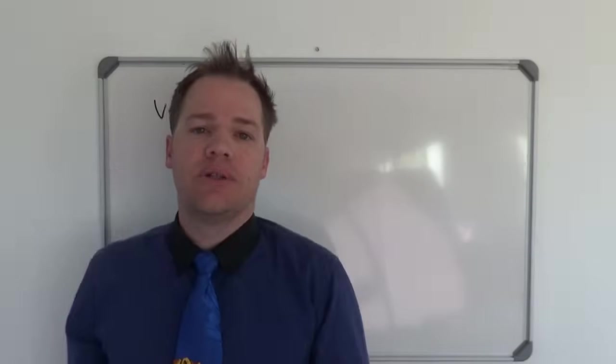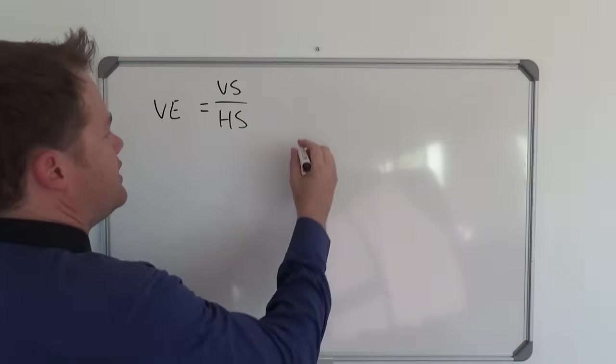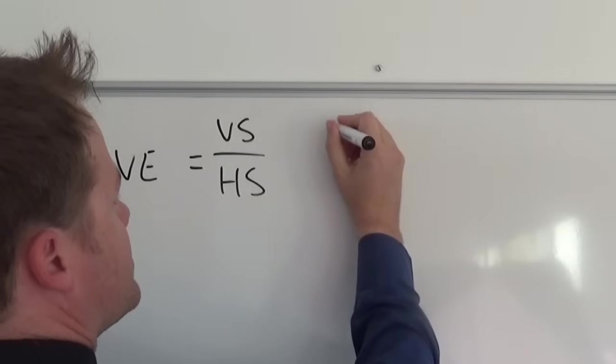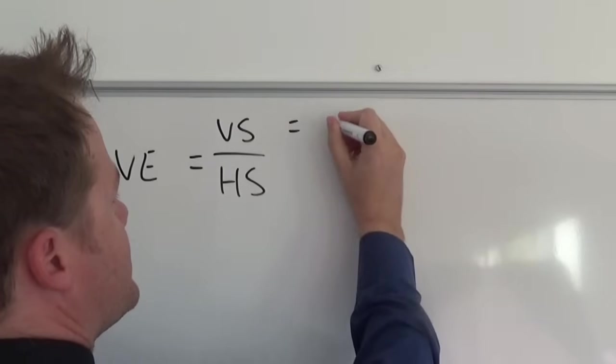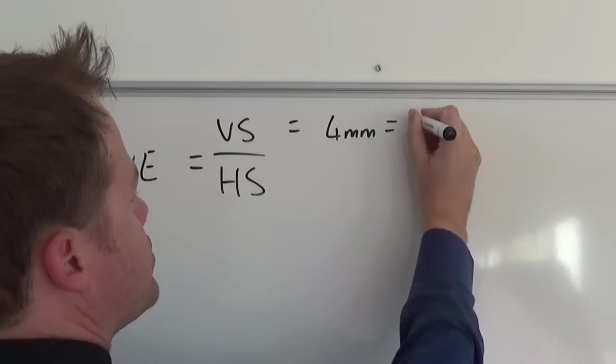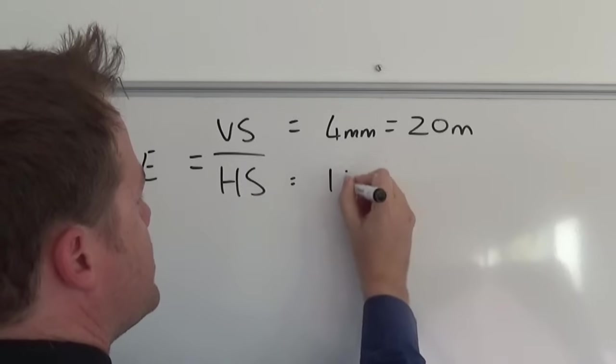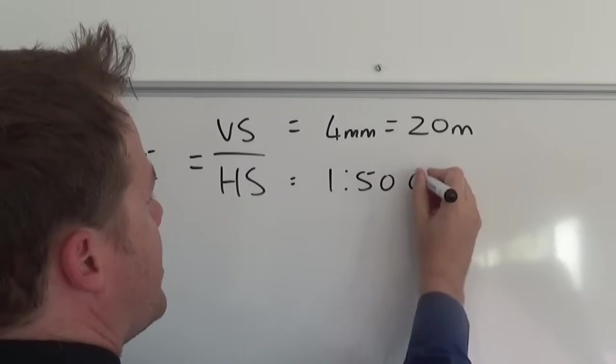Now your teacher will give you two different scales. And the first one is the vertical scale. And let's say the vertical scale is 4 millimeters equals 20 meters. And your horizontal scale is 1 to 50,000.